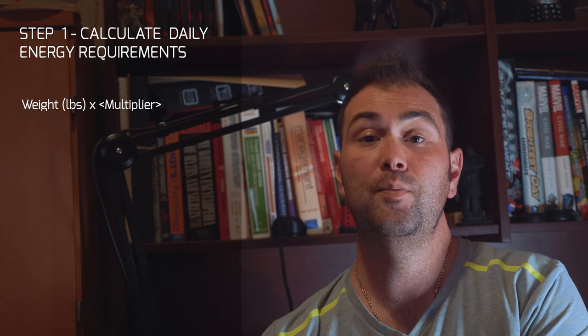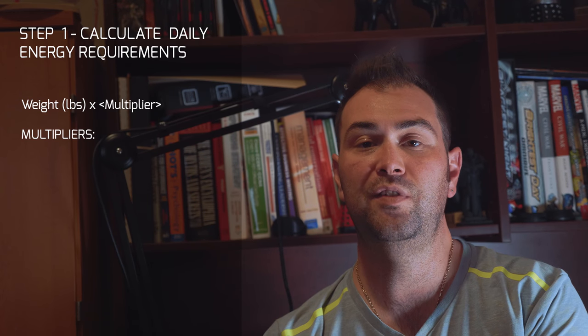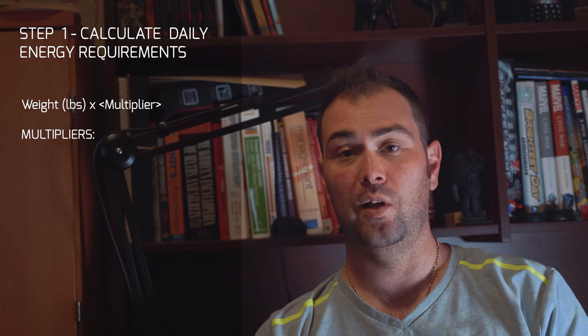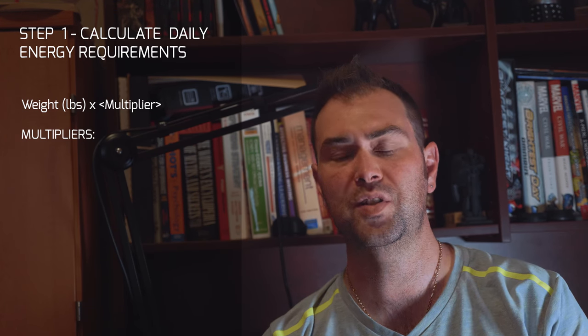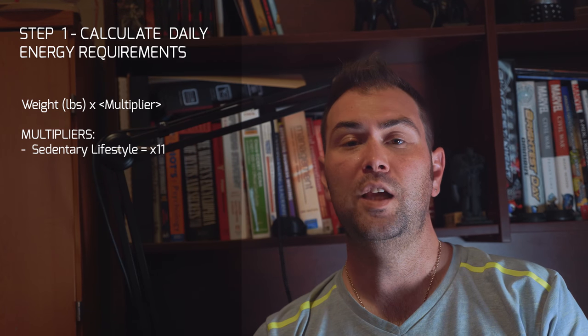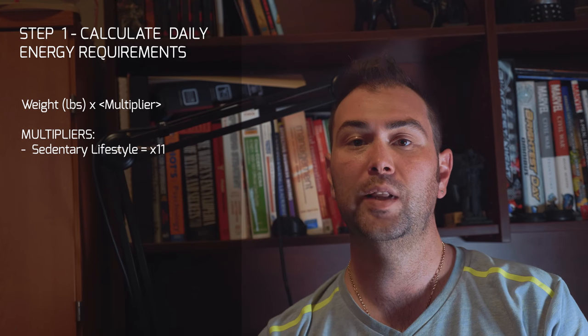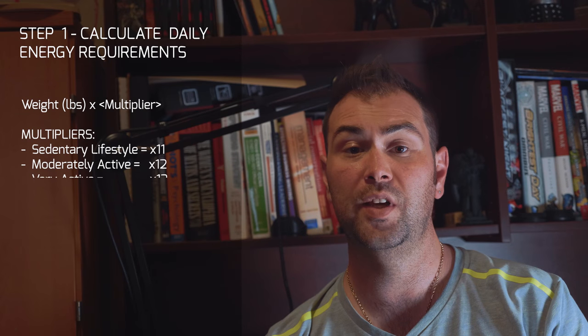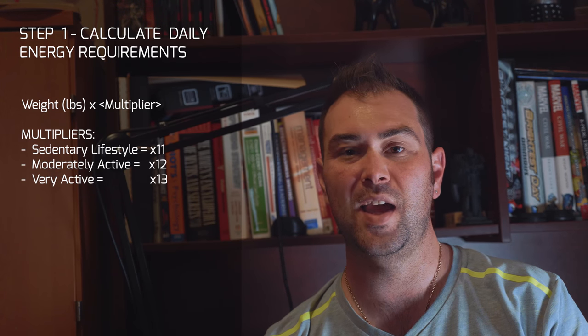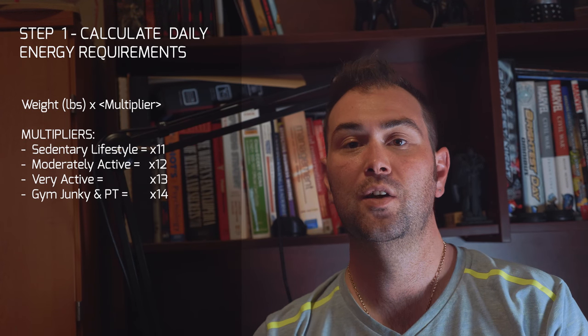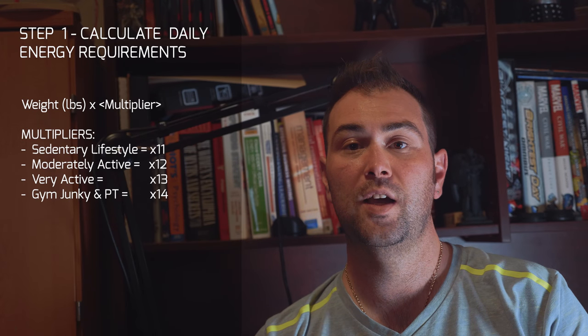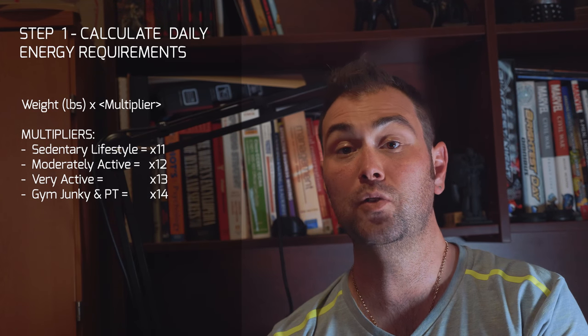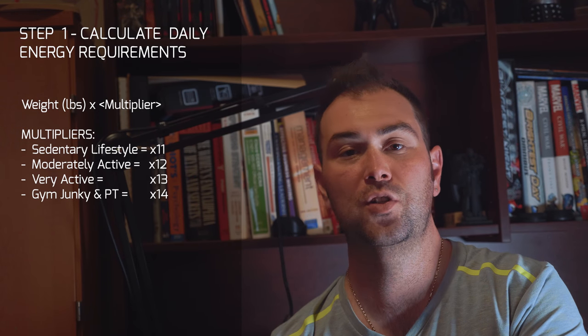Your weight in pounds times a multiplier. Now that multiplier changes depending on your lifestyle. If you lead a primarily sedentary lifestyle, so you're not very active, you work in an office, you don't do a whole lot of exercise or any exercise at all, maybe you go for a walk in the morning but it's not very brisk, use a multiplier of 11. If you exercise two to three times a week, I'd say that you're moderately active, use a multiplier of 12. If you're exercising intensely four to six times per week, use a multiplier of 13. And if you've got an active job and you work out intensely four to six times a week, use a multiplier of 14.